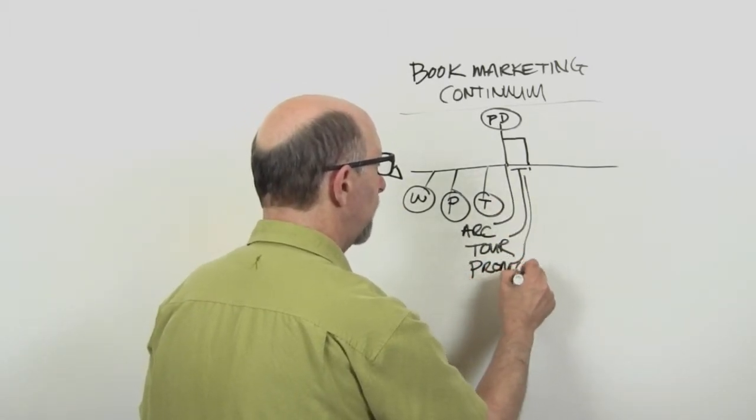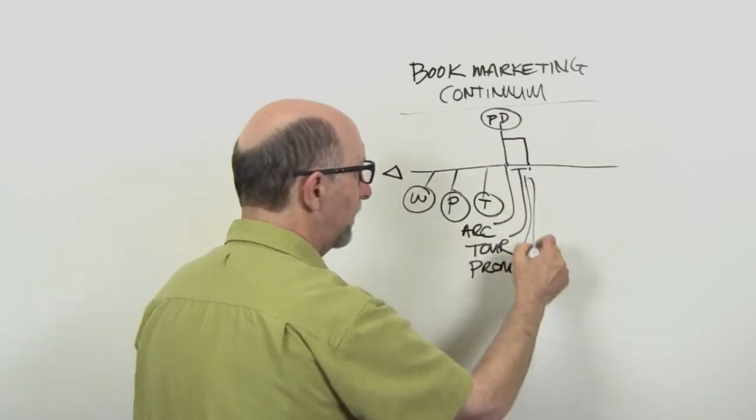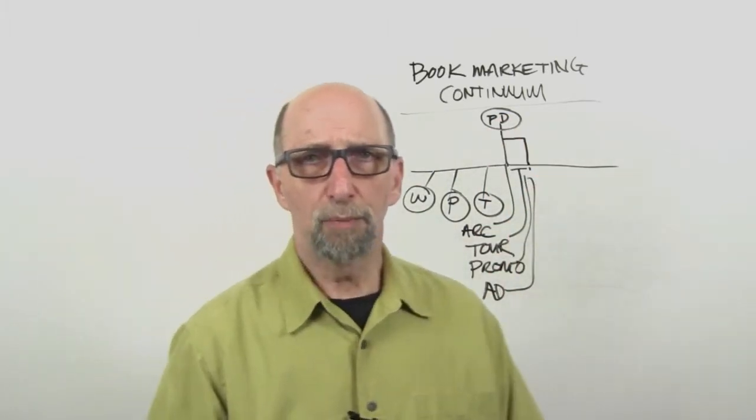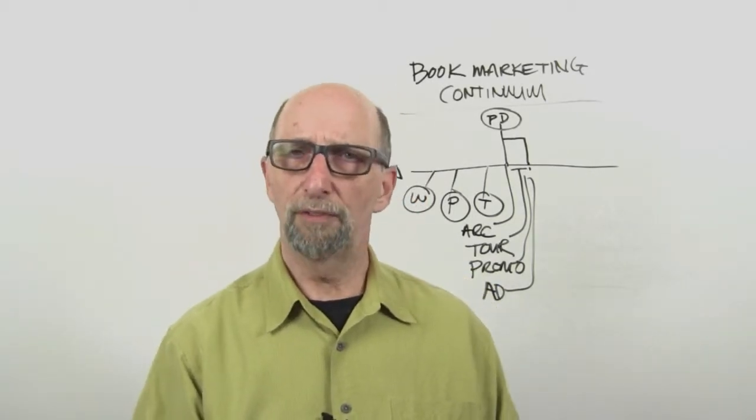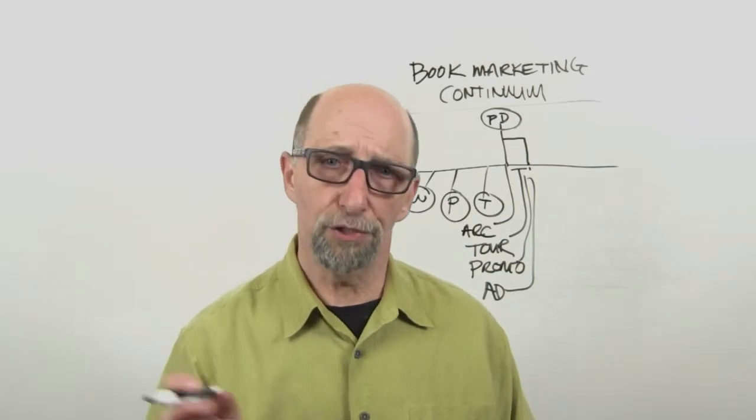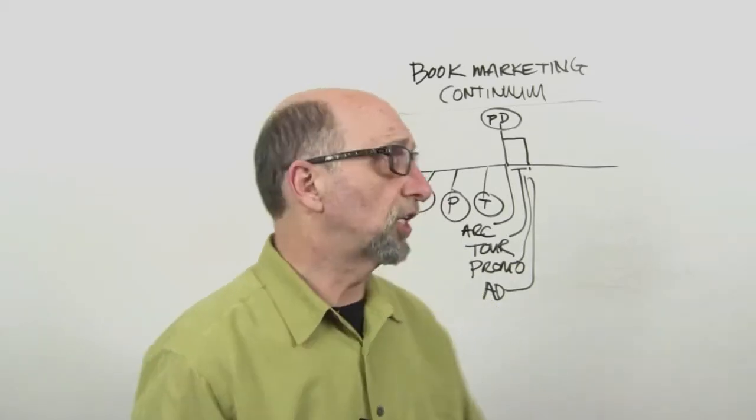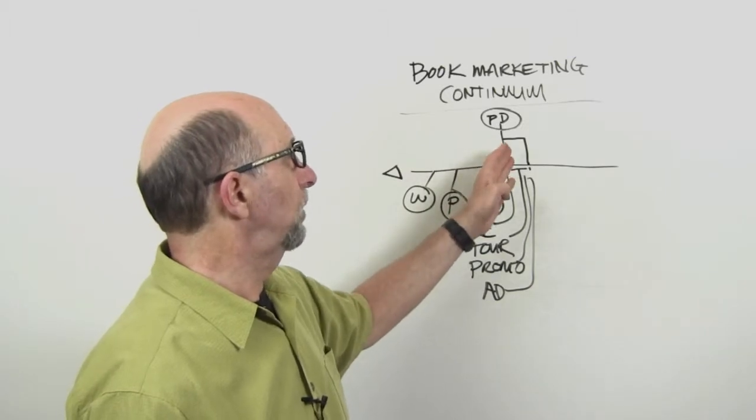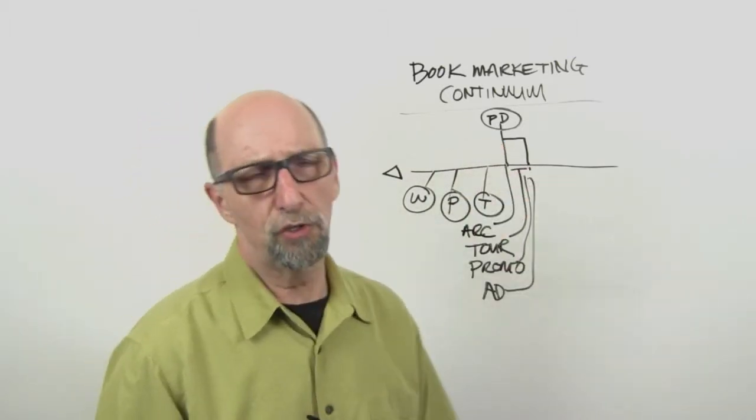You've probably got some promotional stuff going on. That's going to come up as you come into your pub date and a lot of people use advertising. You can run space ads or pay-per-click or whatever it is, if you've got a website set up to help promote your book and sell it, you're going to try and drive traffic there. So, there's a lot of stuff that comes in and starts piling in to your book marketing on the publication date.